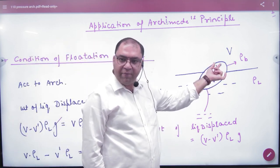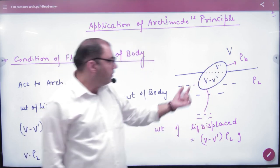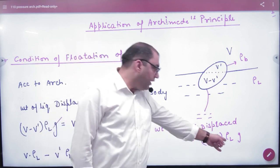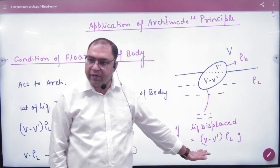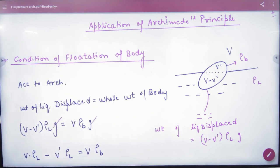If it is in the air and the rest of it is in the water, the weight of liquid displaced will be how much? The volume of liquid is V minus V'. The weight of liquid is ρL into G. What was the weight of liquid displaced?